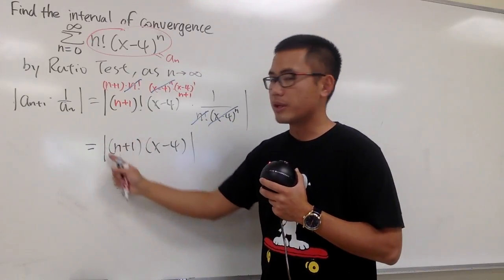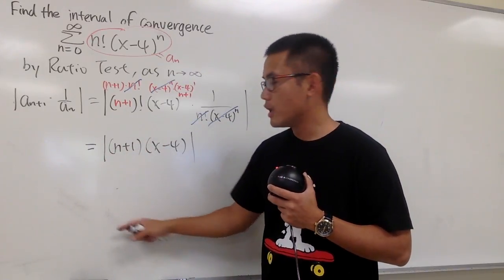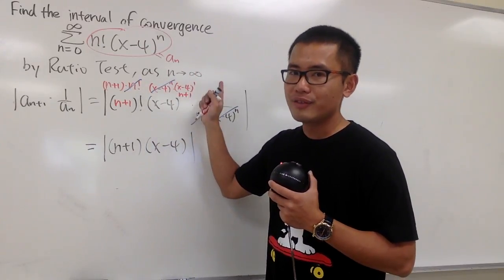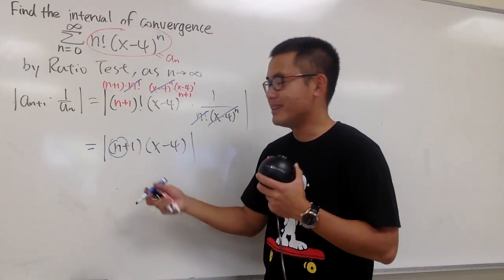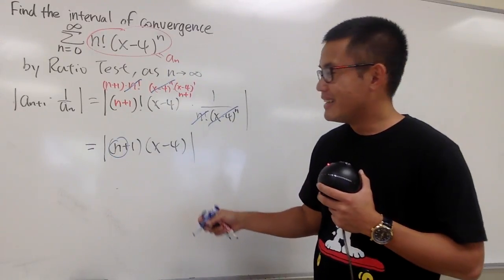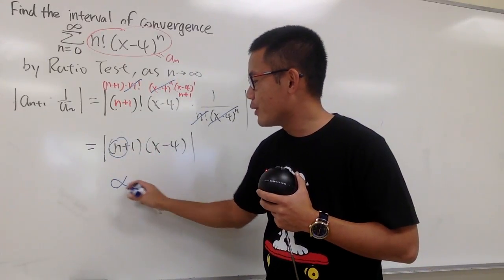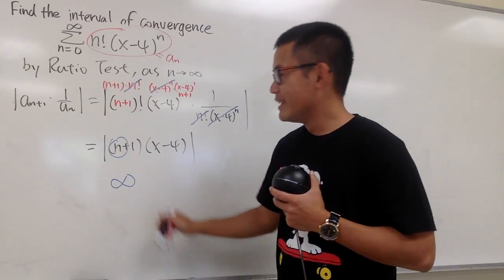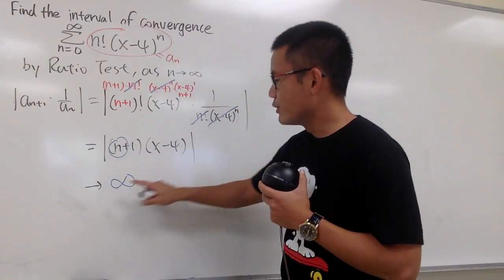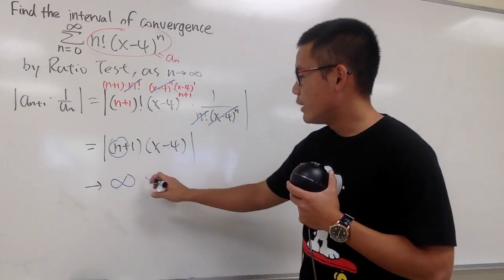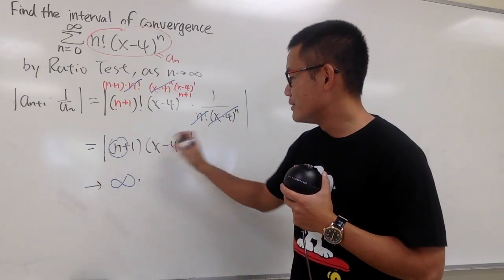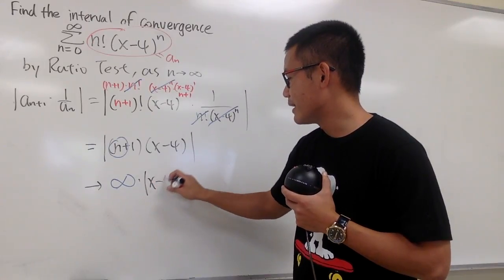We will be looking at this right here, n+1. We take the limit as n goes to infinity. What will happen to n+1 when n goes to infinity? This right here is just going to go to infinity. So let me indicate that—this is going to go to infinity. And we multiply by absolute value of (x-4).